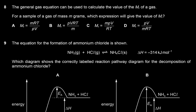Question 8: The general gas equation can be used to calculate the MR of a gas. For a sample of mass m grams, which expression gives the MR? We know PV = nRT, and n = mass/MR. So PV = (m/MR)RT. Rearranging, MR = mRT/PV. The answer is A.